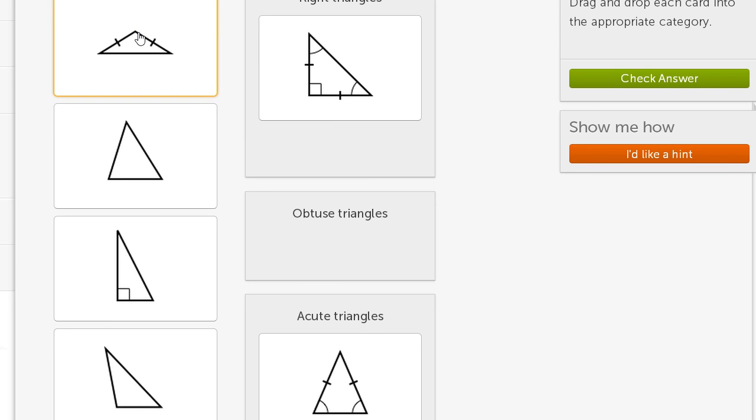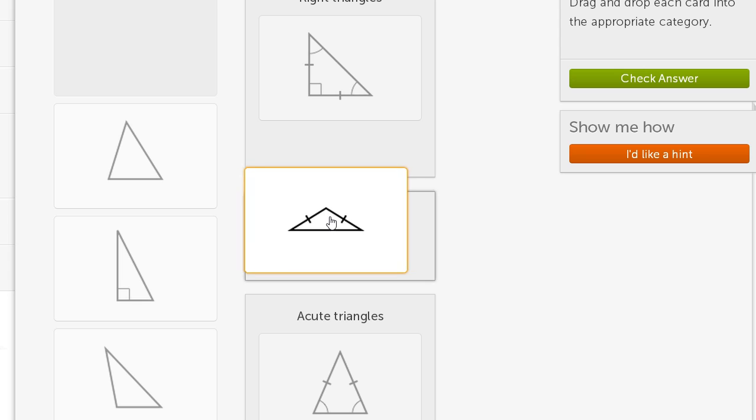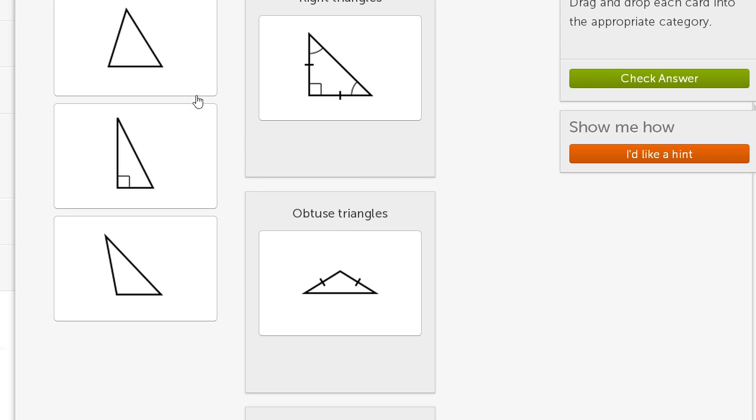Then this one over here, this angle up here. And we can assume that these actually are drawn to scale. This is more open than a 90 degree angle. This is an obtuse angle right over here. It's going to be more than 90 degrees. So this is an obtuse triangle.